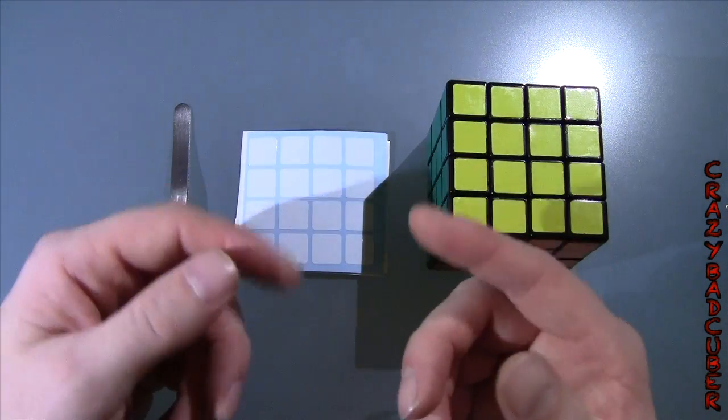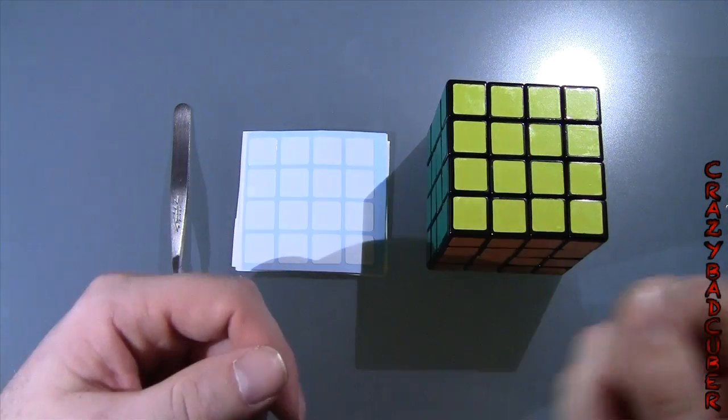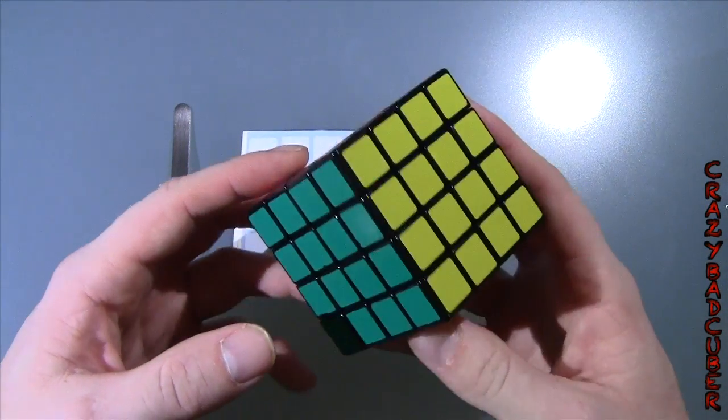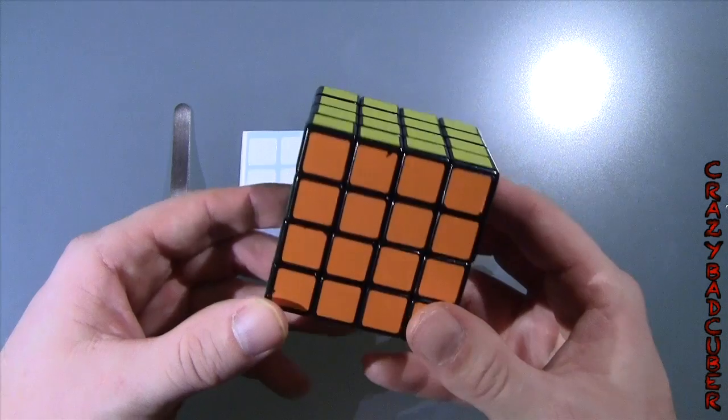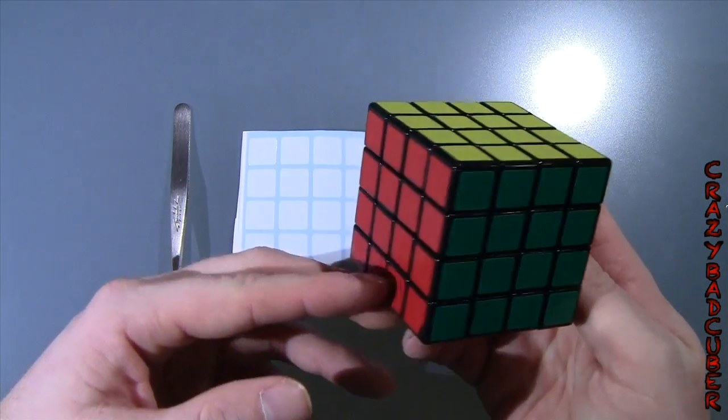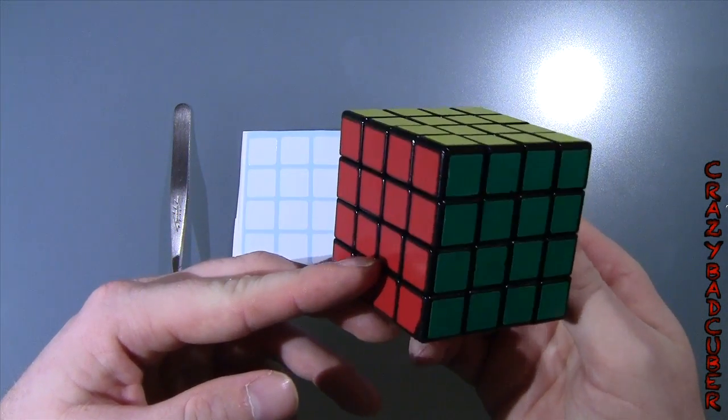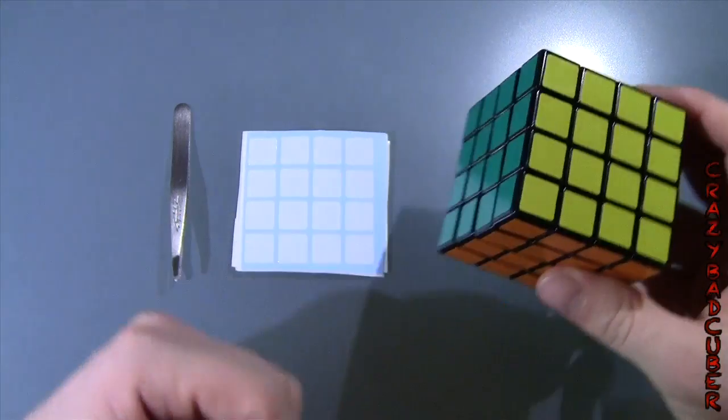Hello everybody, in today's video we're going to learn how to resticker a cube without transfer tape. This one doesn't really need restickering, the stickers are really nice still. This is a ShengShou version 4, but I'm going to resticker it with stickers that I actually prefer, so I'm still going to take these off.